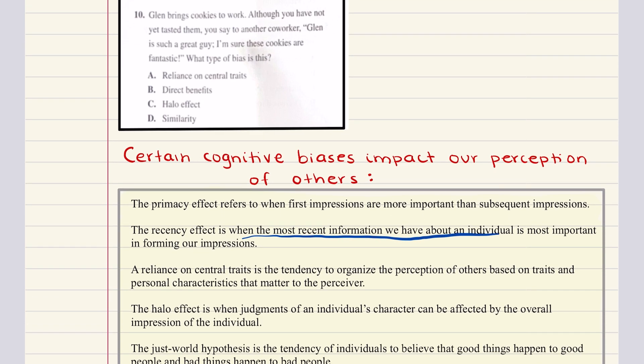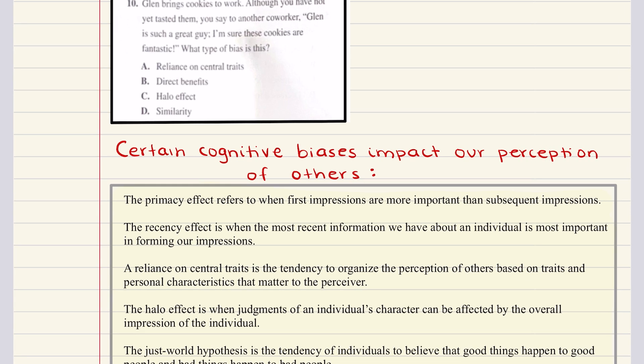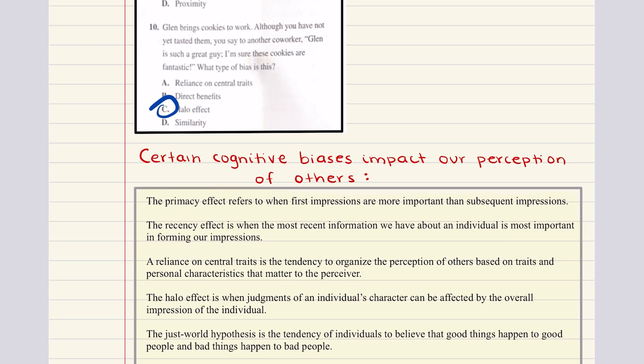Let's go ahead and move into problem 10. 10 says, Glenn brings cookies to work. Although you have not yet tasted them, you say to another coworker, Glenn is such a great guy. I'm sure these cookies are fantastic. What type of bias is this? Is it reliance on central traits, direct benefits, halo effect, or similarity? Now I'm going to tell you the correct answer. Correct answer is C. Why? Because the halo effect is a cognitive bias in which judgments of an individual's character can be affected by the overall impression of the individual. Clearly you think Glenn is such a great guy and therefore the cookies he brings must be fantastic. So correct answer for 10 is going to be C. This is halo effect.